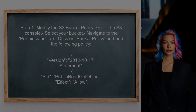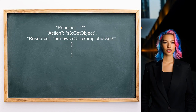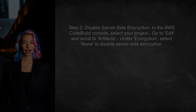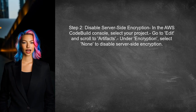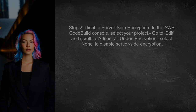To make the artifacts uploaded to Amazon S3 public by default, start by modifying the S3 bucket policy. This policy will allow public access to the objects in the bucket. Next, ensure that the objects uploaded to the bucket do not have server-side encryption enabled, as this can complicate public access. This can be done in the AWS CodeBuild project settings.